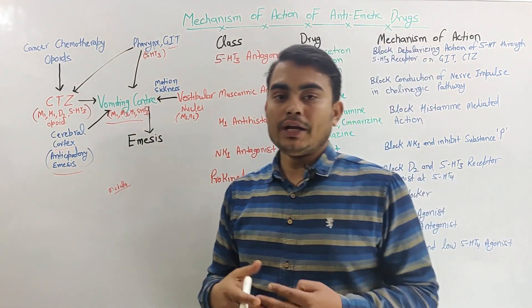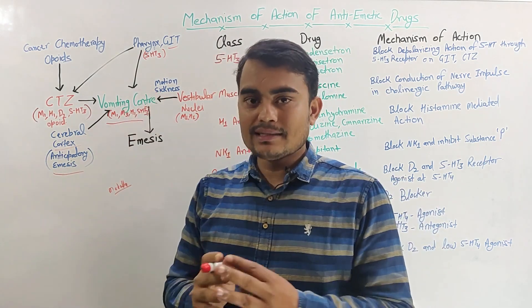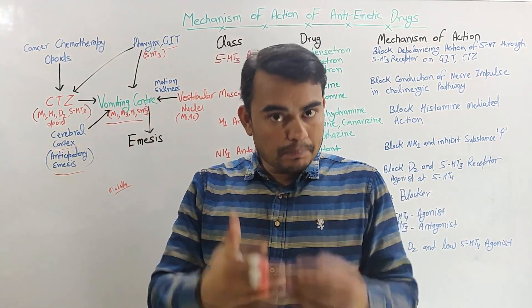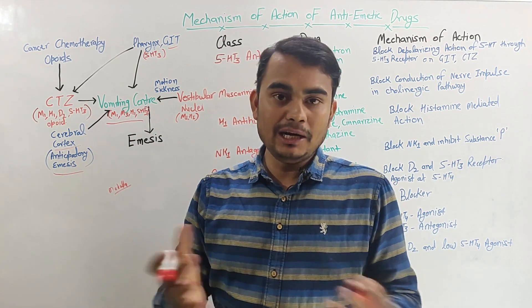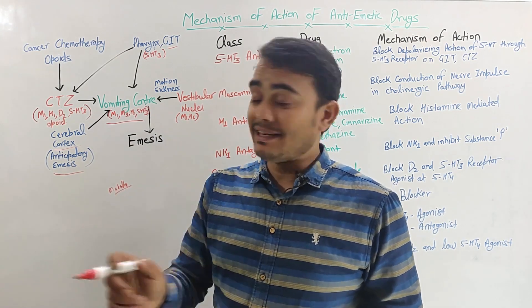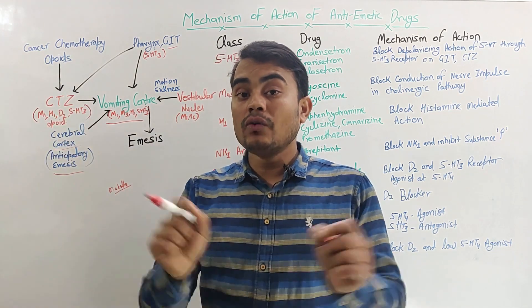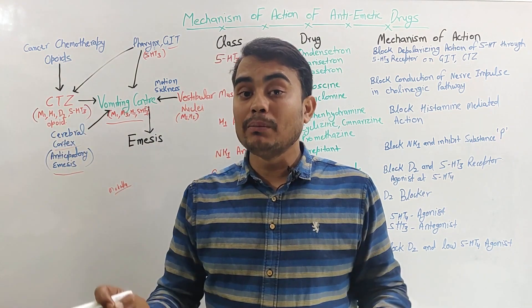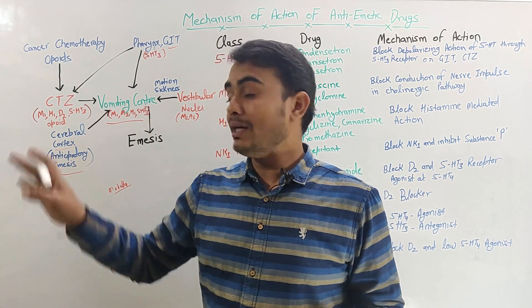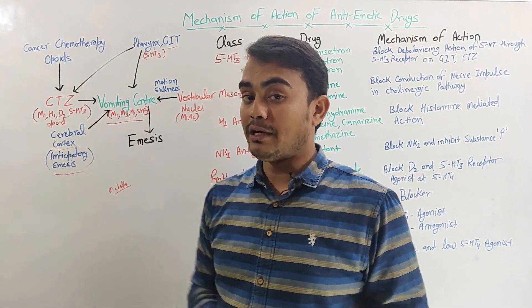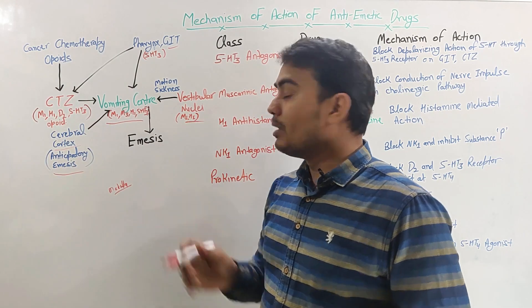A very important point: the vomiting center is covered by the blood-brain barrier (BBB), whereas the CTZ center is not covered by the blood-brain barrier. This is a very important distinction — the CTZ is not protected by the BBB.